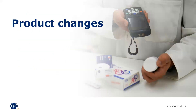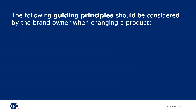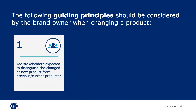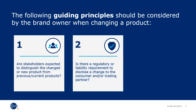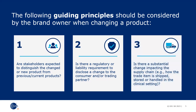Now let's consider several different product changes and the impact on the GTIN allocation. The following guiding principles should be considered by the brand owner when changing a product: Are stakeholders expected to distinguish the changed or new product from previous or current products? Is there a regulatory or liability requirement to disclose a change to the consumer and or trading partner? Is there a substantial change impacting the supply chain, e.g. how the trade item is shipped, stored or handled in the clinical setting? At least one of these guiding principles must apply for a GTIN change to be required.